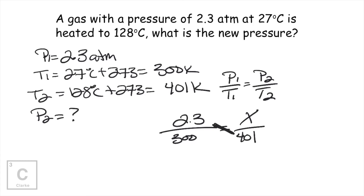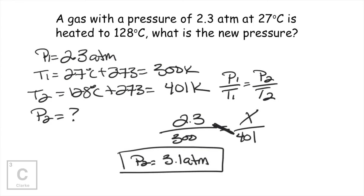We're going to cross-multiply: 401 times 2.3 divided by 300. Our pressure two comes out to be 3.1 atmospheres. We showed an increase in temperature, so our pressure also increased.